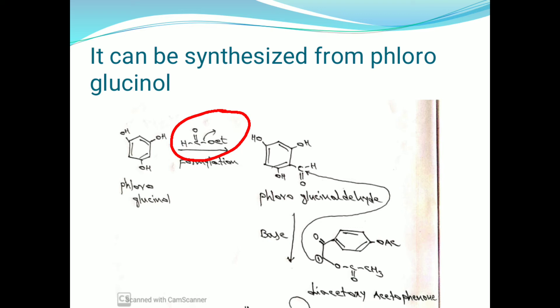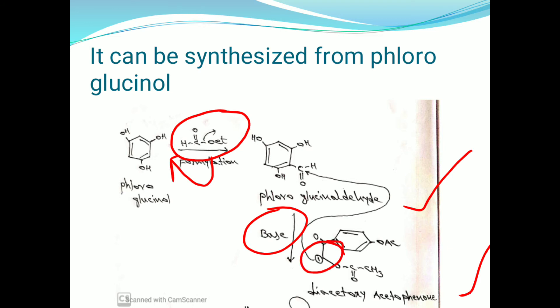In this reaction, an aldehyde group is added to phloroglucinol, so phloroglucinol is converted into phloroglucinaldehyde. This phloroglucinaldehyde is then treated with diacetoxy acetophenone in the presence of a base. The base removes a hydrogen from the CH₂ group.